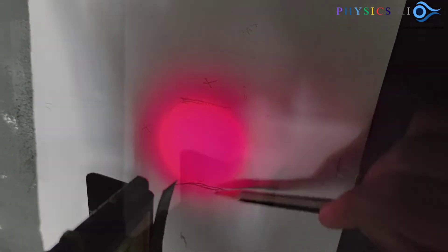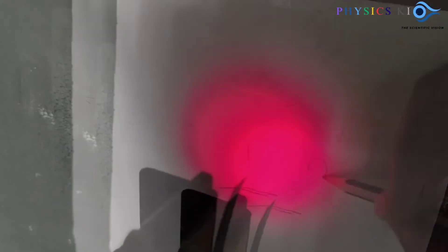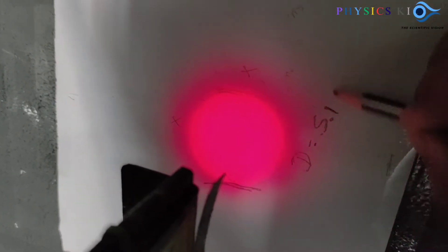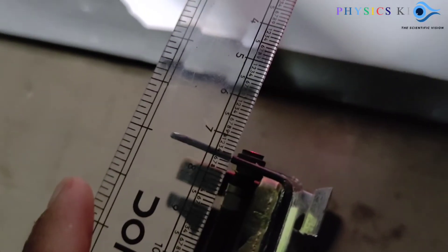Using a scale, measure the diameter of this brighter spot. I got 5.1 centimeters. After that, measure the distance between the screen and the spot, which is 7.5 centimeters.